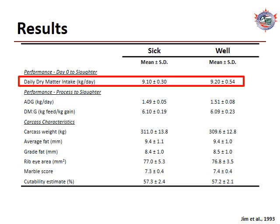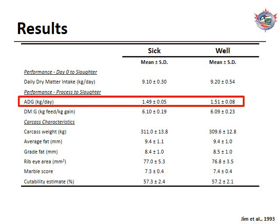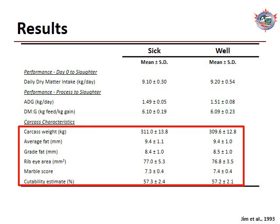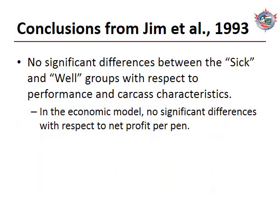Daily dry matter intake was not statistically different between sick and well calves. There was also no difference in average daily gain, and therefore no difference in the dry matter-to-gain ratio between the two groups. This was a very important finding, much different from the existing paradigm that calves suffering from BRD were less efficient than those without BRD. Following a similar theme, there were no statistical differences in any carcass characteristics between the two groups. It was concluded that there were no differences in performance or carcass characteristics, and in the economic model, no significant differences in profit per pen.